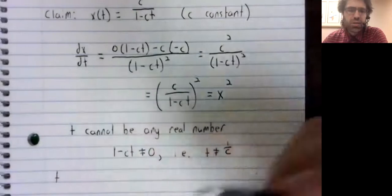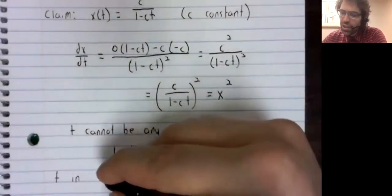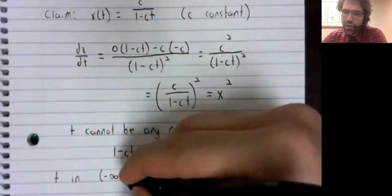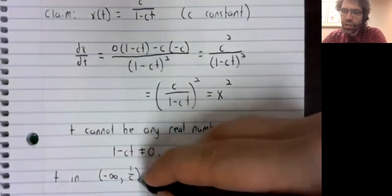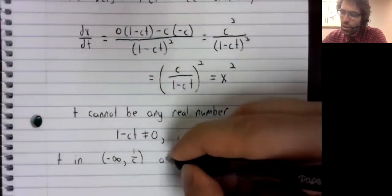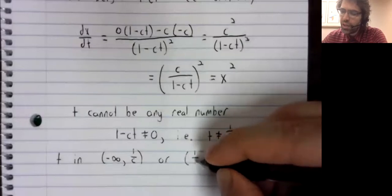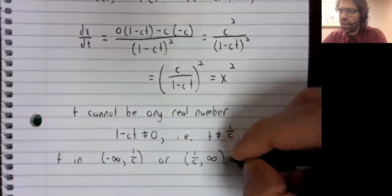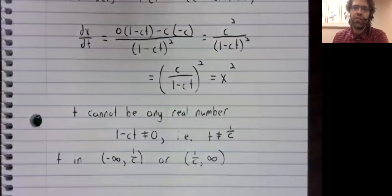Well, it's fine, because t can be in the interval from negative infinity to one divided by c, or t can be in the interval from one divided by c to positive infinity.